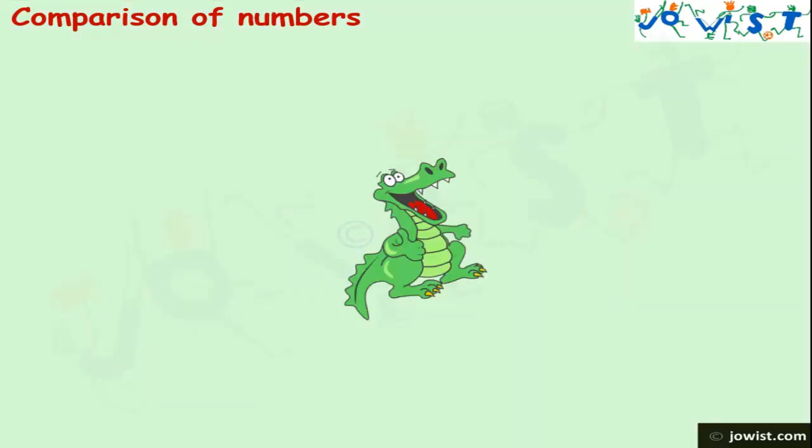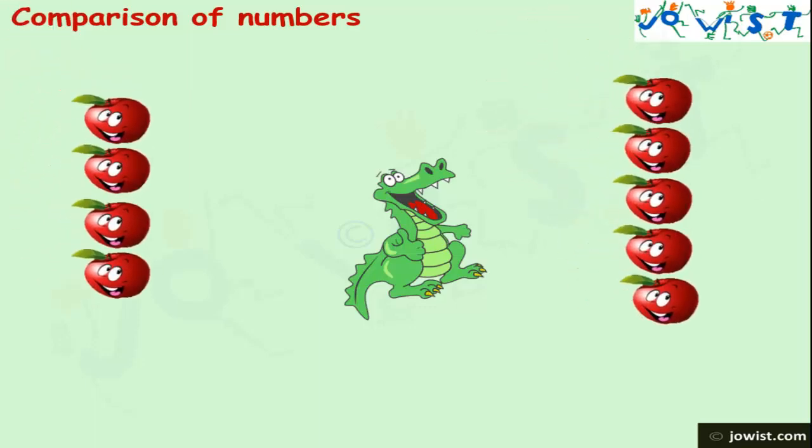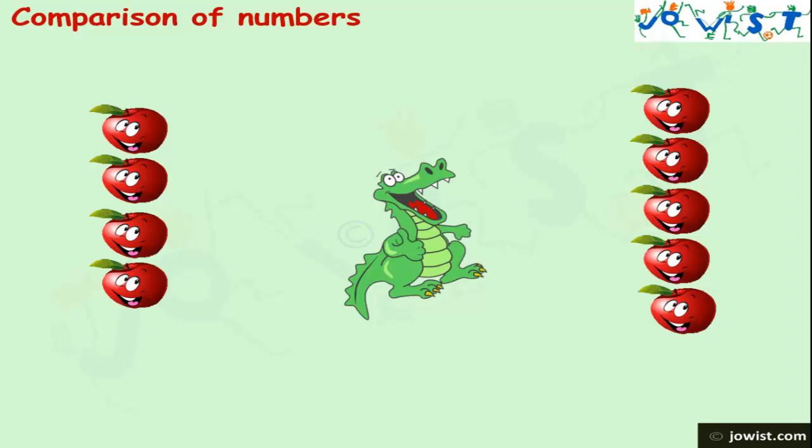It again walked some distance and found more apples. One side had five apples and the other side had four apples. Look at the shape of the dragon's mouth. It is always opened on the side which has more number of apples.